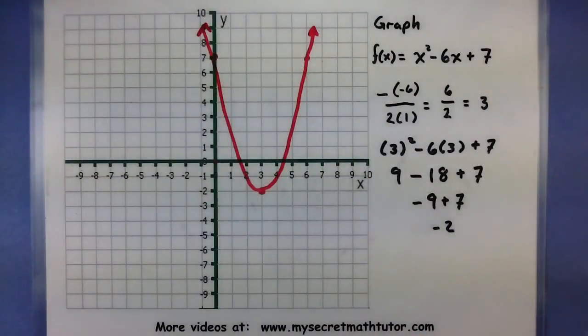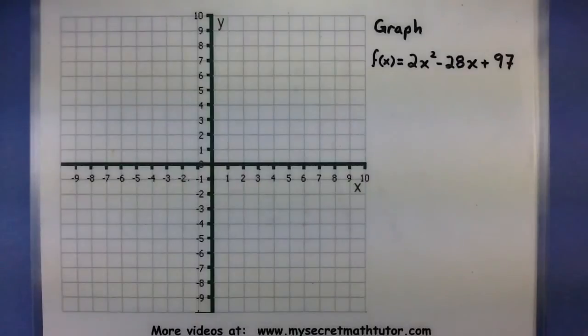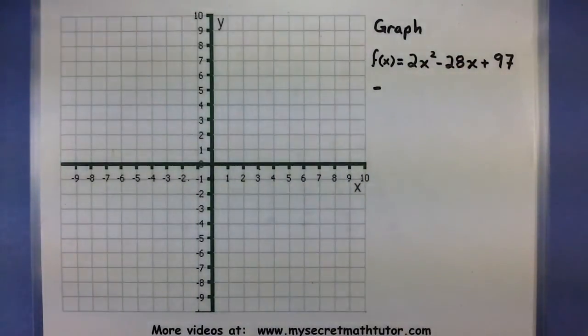Let's do another example, just to make sure that we have this process down. So now I want to graph f of x equals 2x squared minus 28x plus 97. So I've chosen one with some much larger coefficients. We'll start off in much the same way. We'll use that formula, negative b over 2a, and find our vertex.